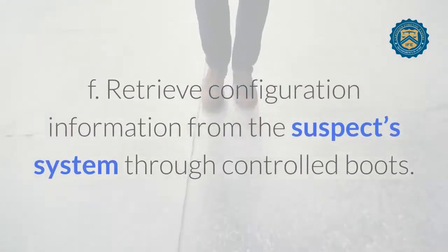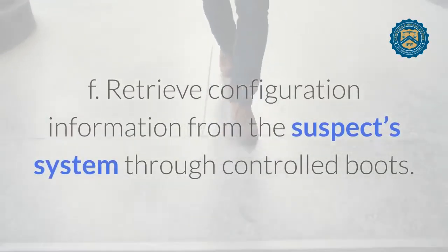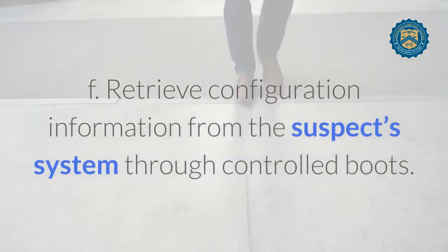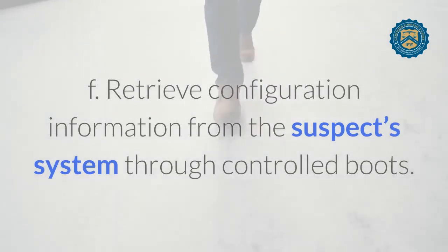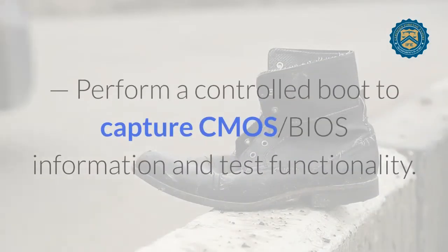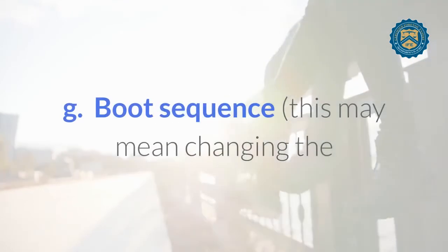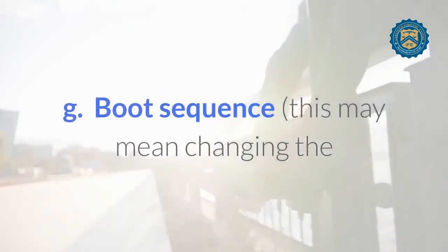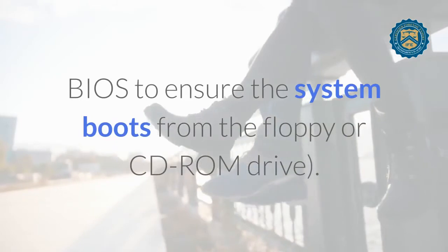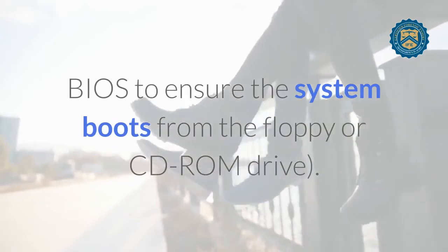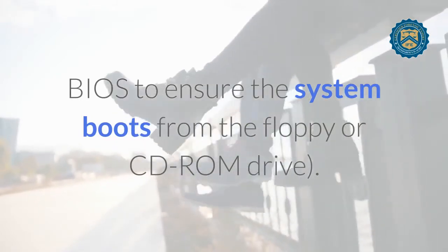F. Retrieve configuration information from the suspect's system through controlled boots. Perform a controlled boot to capture CMOS information and test functionality. G. Boot sequence — this may mean changing the BIOS to ensure the system boots from the floppy or CD-ROM drive.